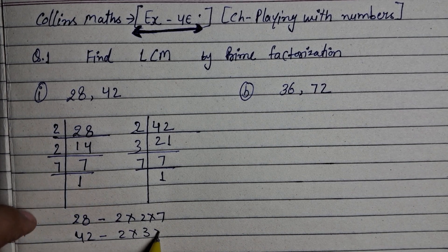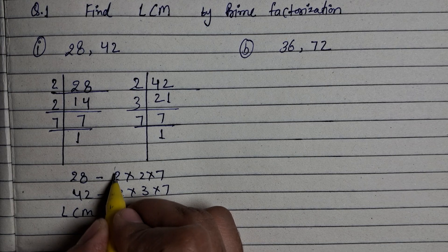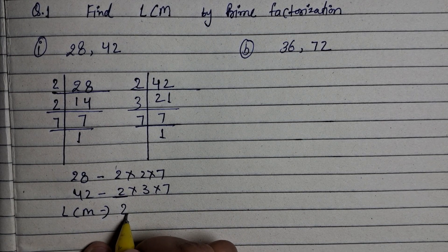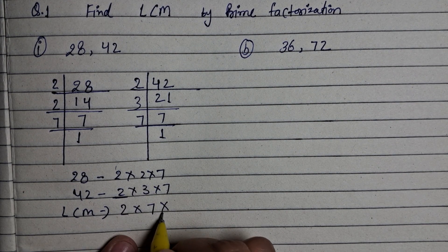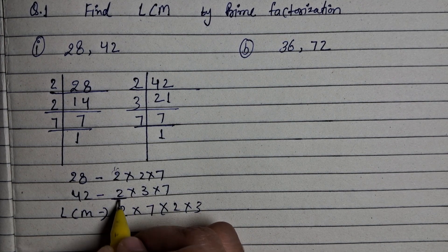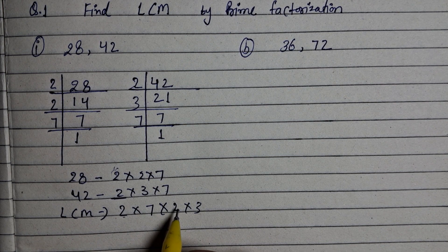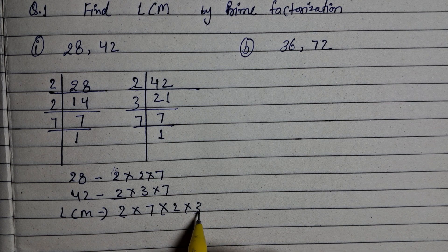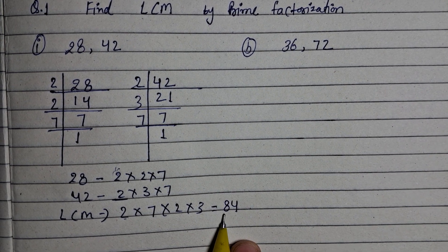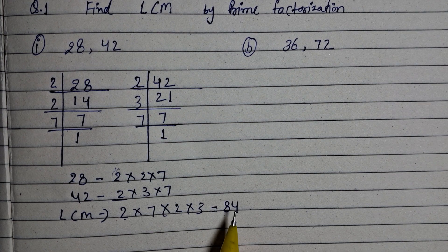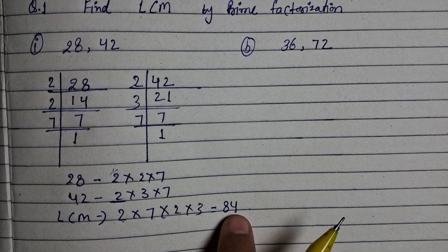Now we write 28 as 2 × 2 × 7, and 42 as 2 × 3 × 7. Now to find LCM, we write the common pairs: 2 and 7 are common. Then we write what is not common: 2 and 3. Multiply: 2 × 7 = 14, 14 × 2 = 28, 28 × 3 = 84. So LCM is 84, which is the lowest common multiple that divides both.